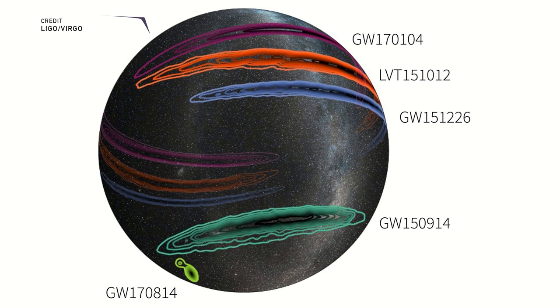But now with Virgo added on, we're 20 times more accurate than just LIGO alone. The gravitational wave that was detected by all three is down there in the bottom left, and you could see it is in a very small spot of the sky where we think it's at.